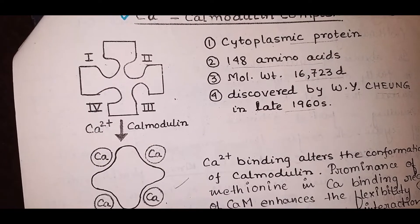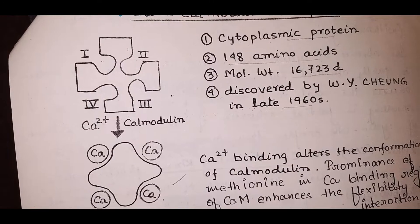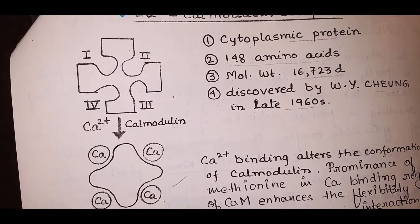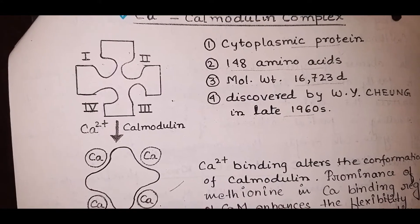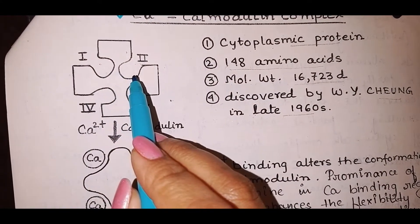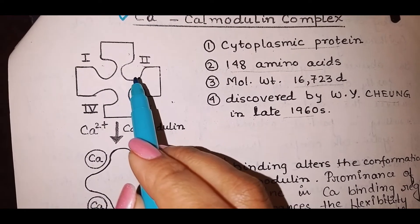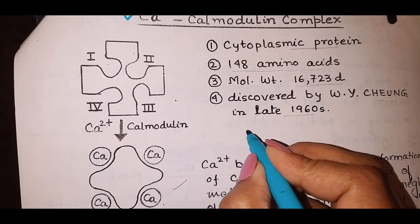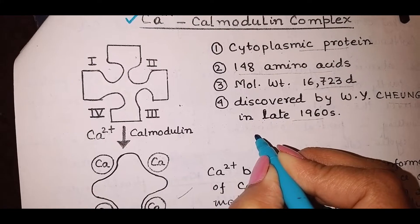Calmodulin, or CaM, is a calcium binding protein abundantly present in the guard cells. Now look at its structure. Each CaM can be written like this, calmodulin.